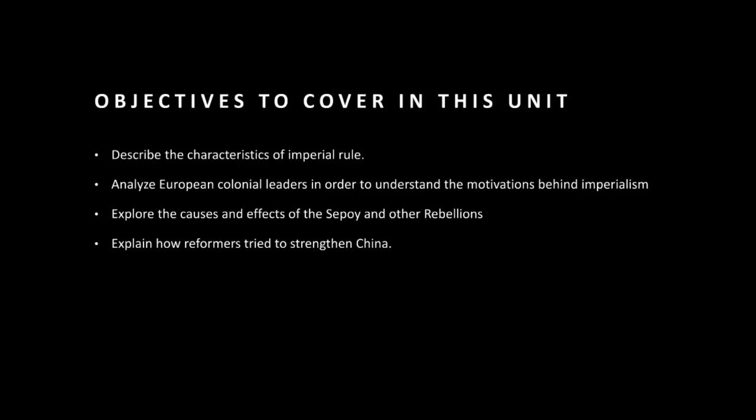Third is cultural assimilation. Imperial rulers often imposed their culture, language, and values on subject populations, leading to cultural assimilation and the erosion of indigenous traditions. Fourth is military supremacy — imperial powers maintained large standing armies to assert control over conquered territories and suppress resistance or rebellion. These define the nature of imperial rule and its impact on subject populations throughout history.